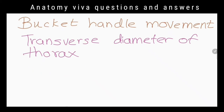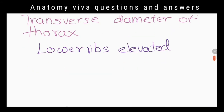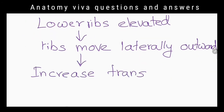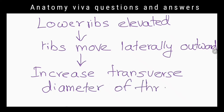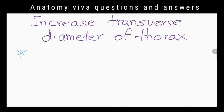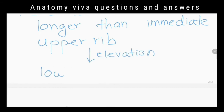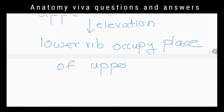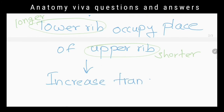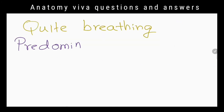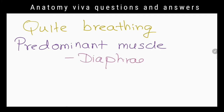How does bucket handle movement increase the capacity of the thorax? When lower ribs are elevated, the ribs move laterally and outwards, increasing the transverse diameter of the thorax. Also, when these ribs are elevated, the longer lower ribs occupy the place of shorter upper ribs, which also contributes to increasing the transverse diameter and the capacity of the thoracic cavity. What is the predominant muscle in quiet breathing? The diaphragm.